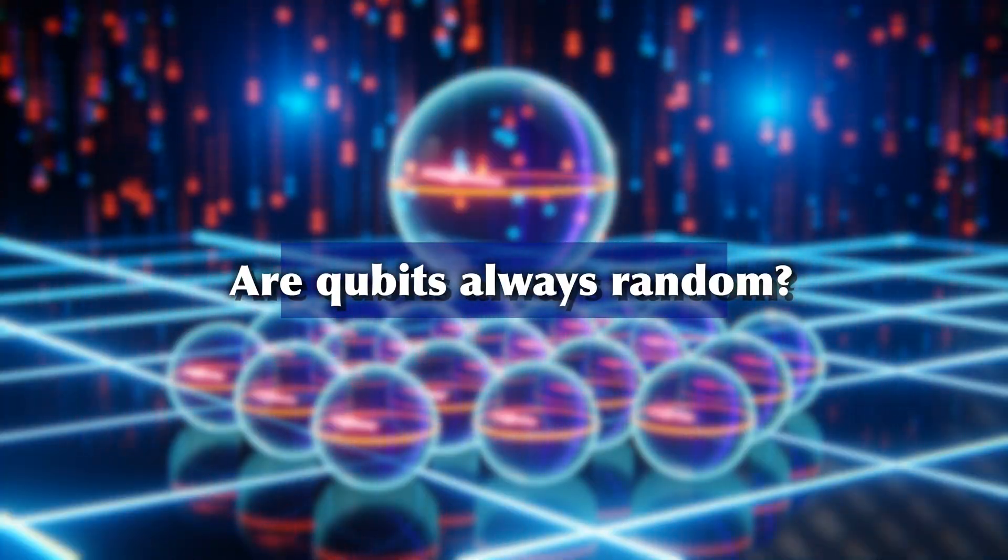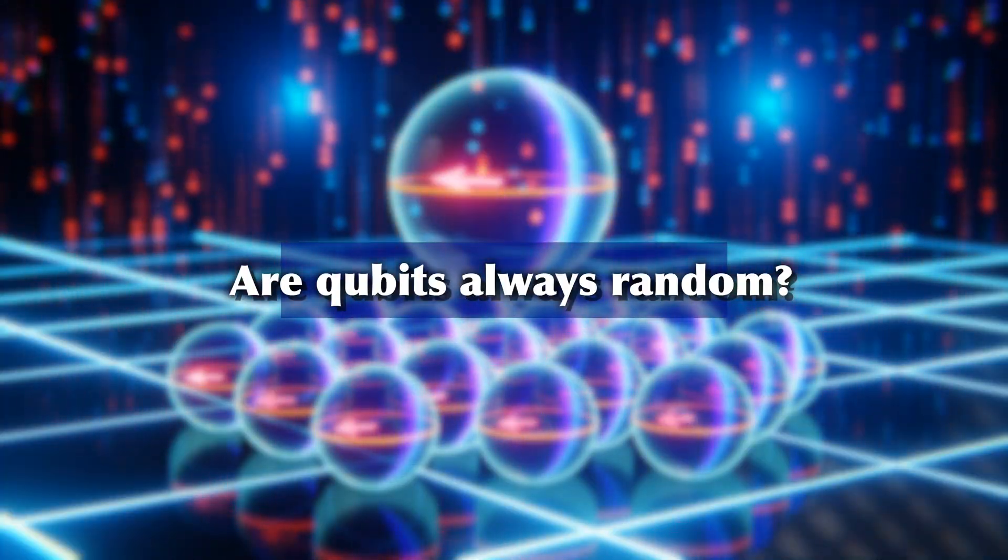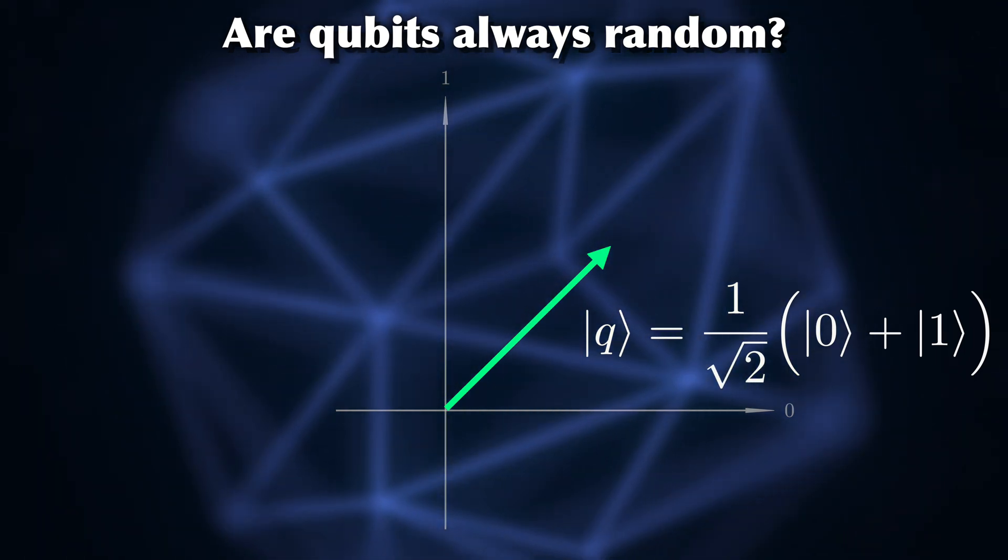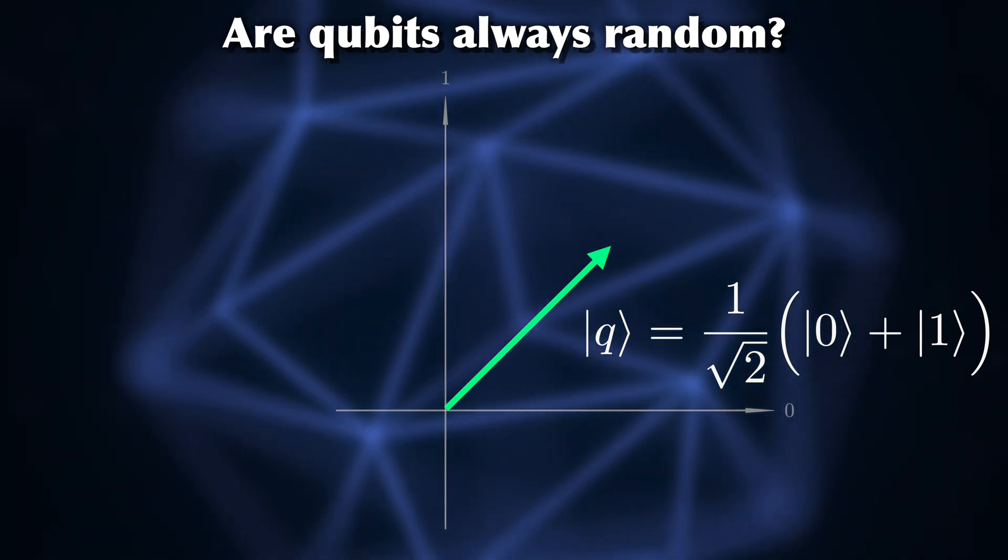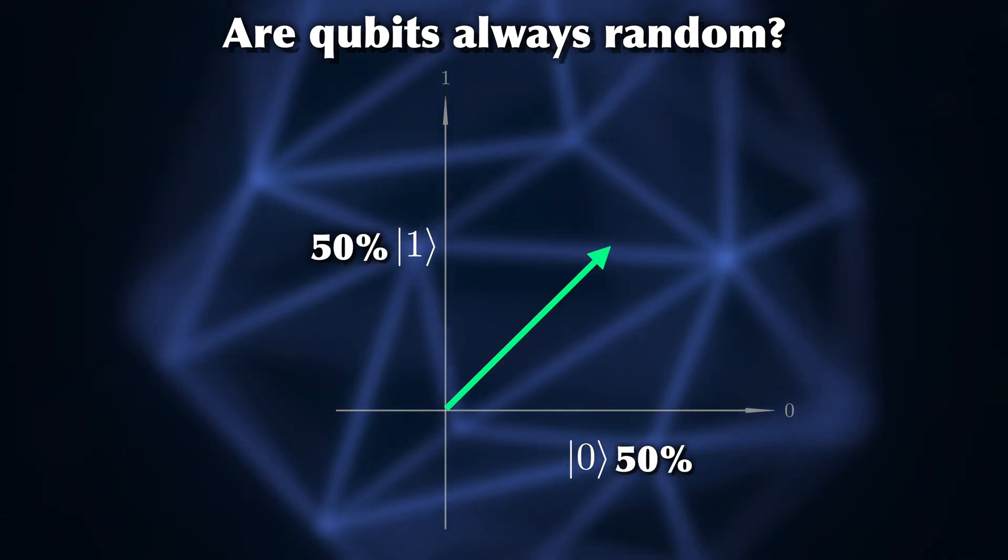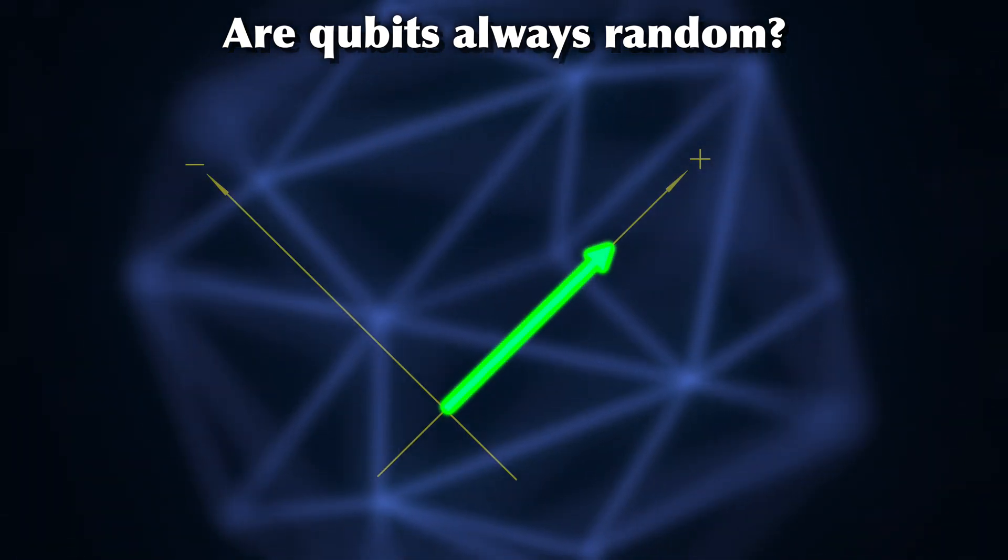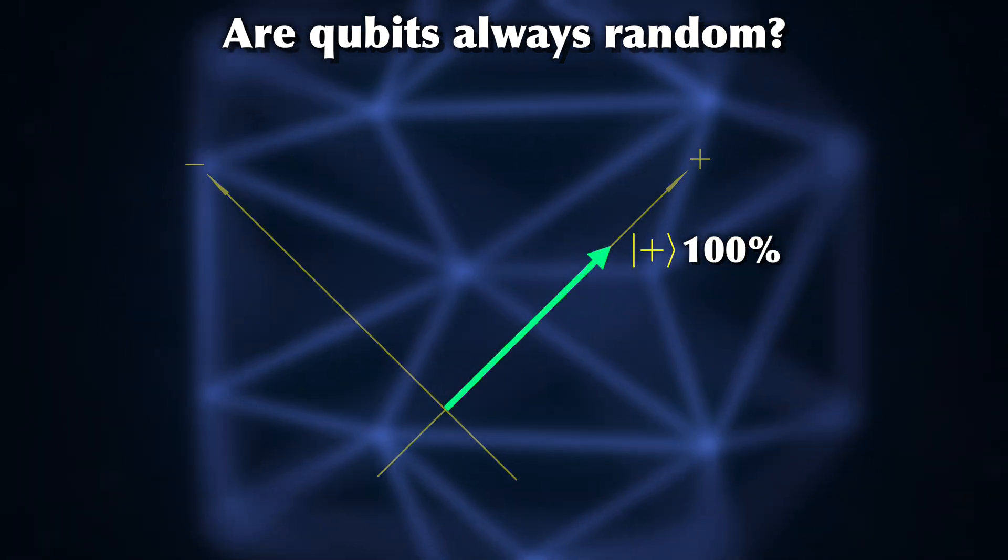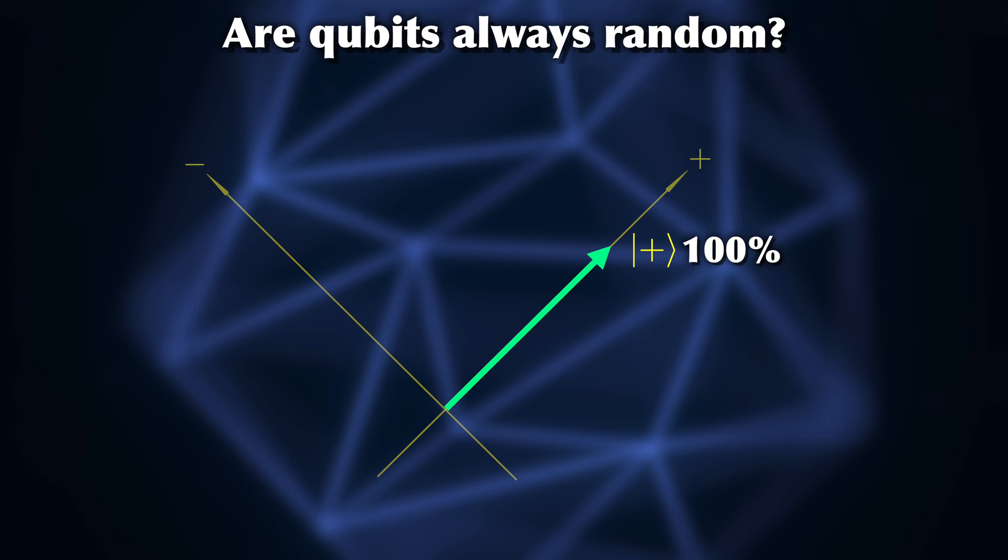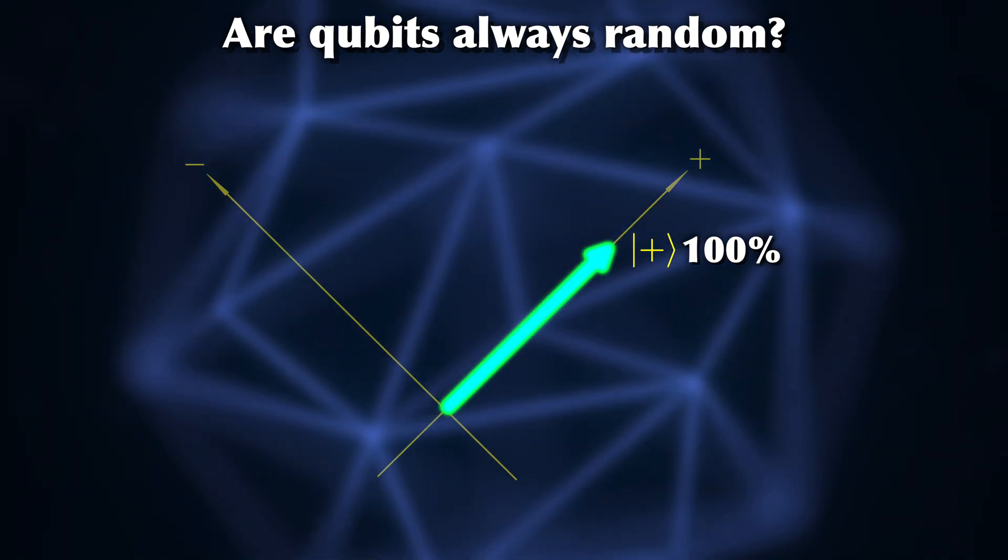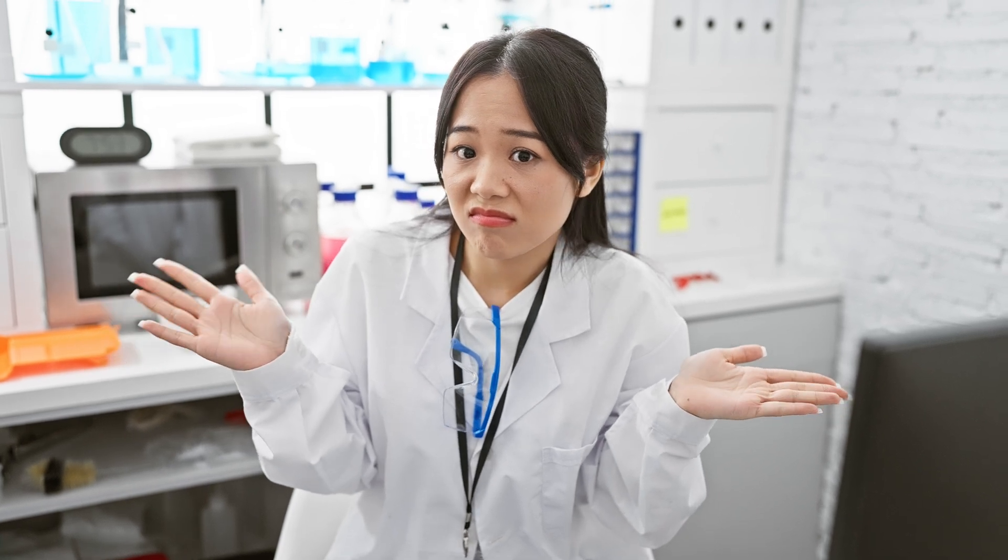Are qubits always random? Does that mean we simply don't know what we're doing? Let's return quickly to the example from earlier. If we measure the state plus in the Z basis, we get 0 or 1 with a 50% probability each. If we measure it in the X basis, we get plus with 100%. This shows us that quantum mechanics doesn't mean that we can't know measurement outcomes. Because there are bases where we do. Quantum mechanics doesn't just simply mean everything is probabilistic all the time. There is a clear mathematical model behind it.